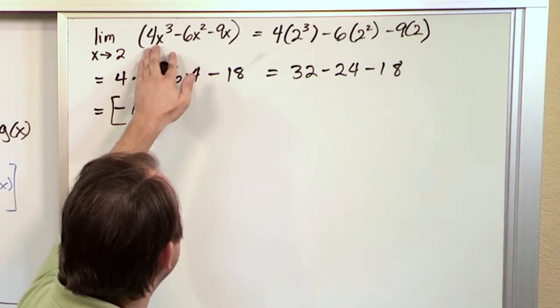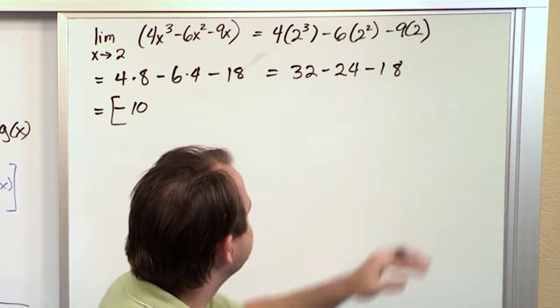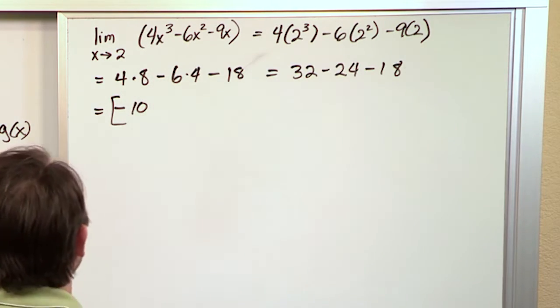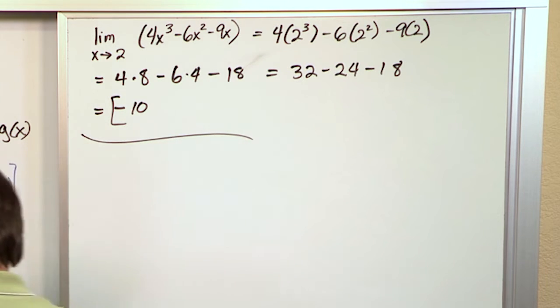What's happening is you're doing the limit for each individual thing here. So let's move on to another problem.